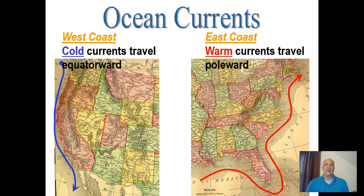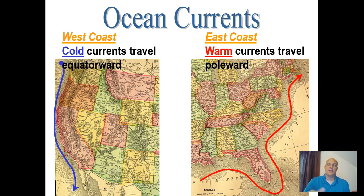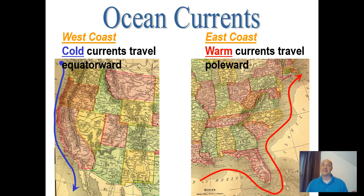Ocean currents are very important for determining temperature at any location. Along the west coast of continents, cold currents travel equatorward — along California, this is the California Current, which has a moderating influence on temperatures. On the east coast, a warm current called the Gulf Stream flows northward. The Gulf Stream plays a major role in storm development, especially nor'easters and coastal cyclones strengthened by warm ocean energy below.